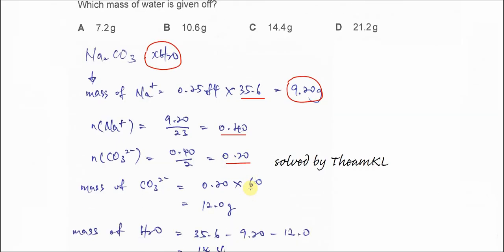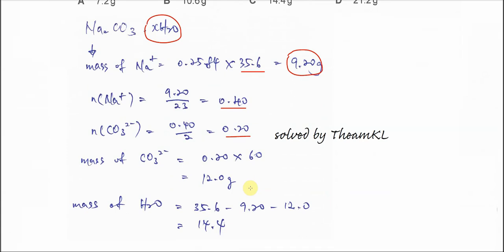And therefore you can get the mass of carbonate. So 0.2 times 60. 60 is the molar mass of the carbonate ion. So you get 12 grams.